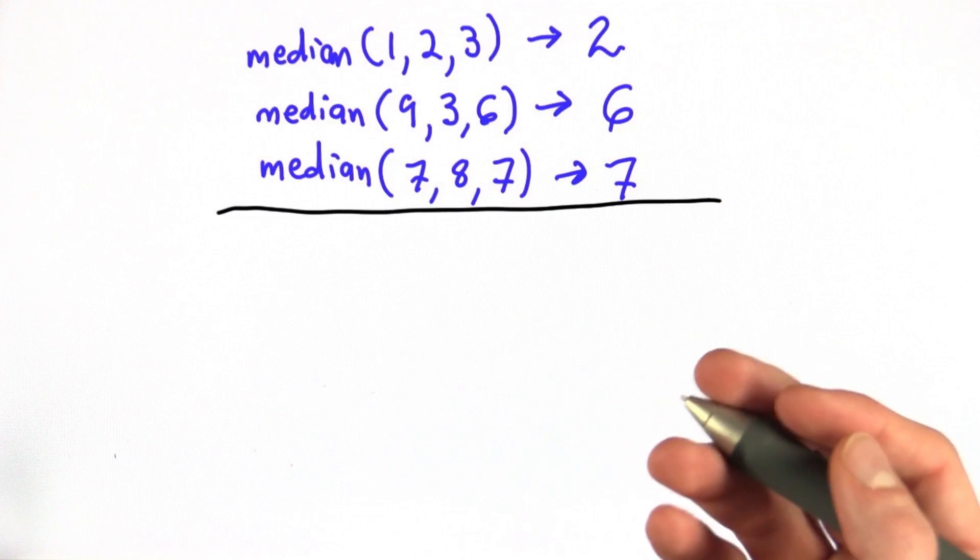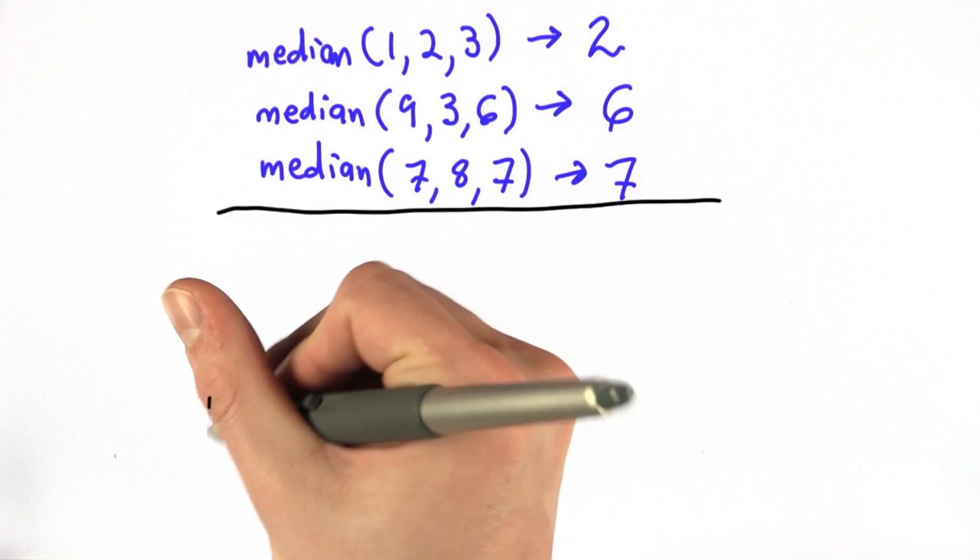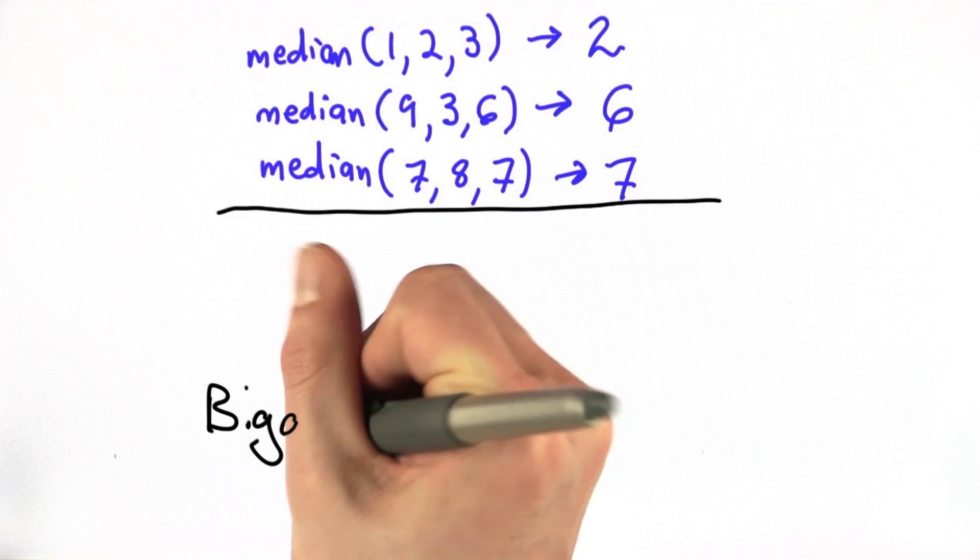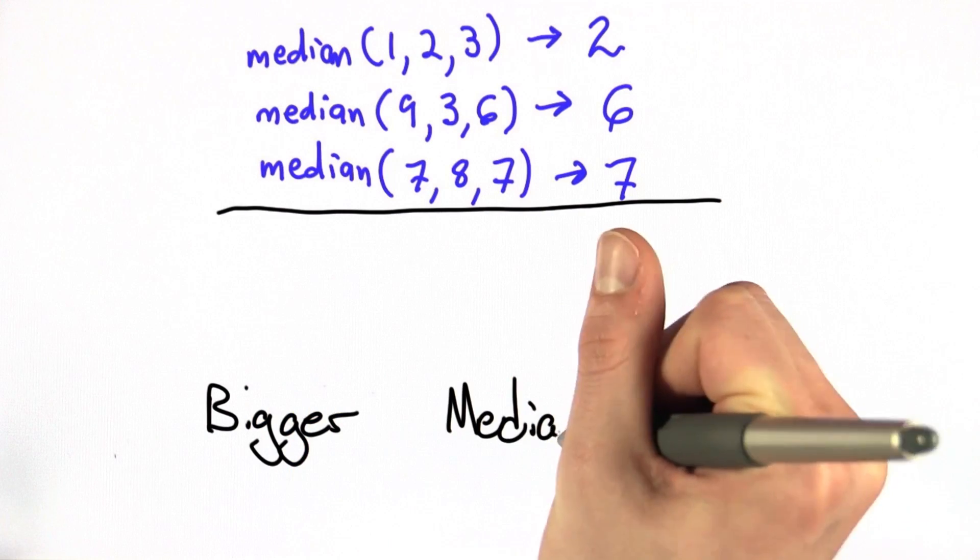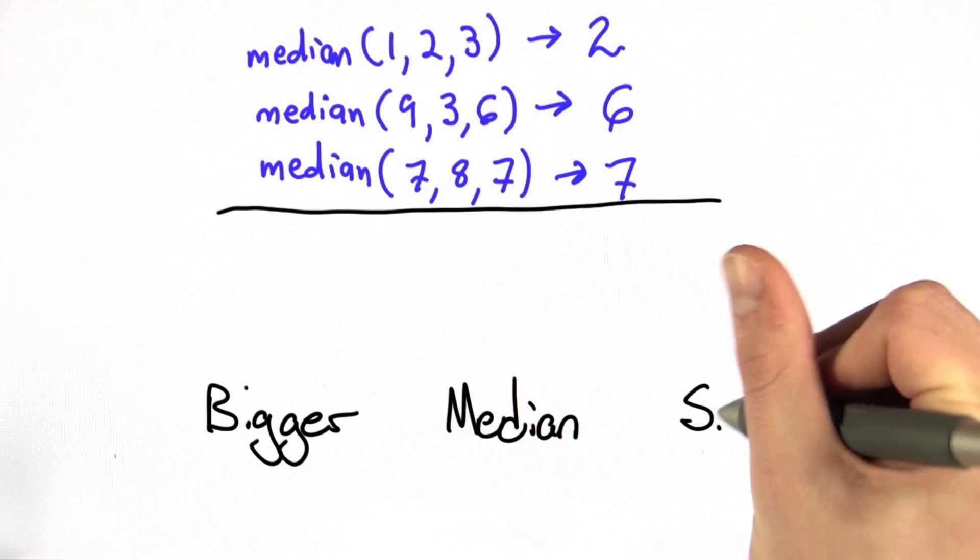One way to solve this problem is to look at the possibilities. We know that there's a bigger number, the median, and a smaller number.